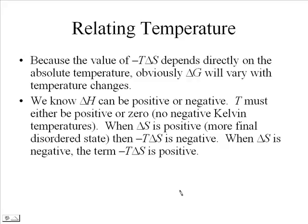Delta H can be a positive value or a negative value. If it's positive, that does not necessarily lead to spontaneity, but the negative T delta S term also plays a factor. The temperature must always be a positive number — it cannot be negative. So when delta S is positive, the whole negative T delta S term is negative because of that negative sign.